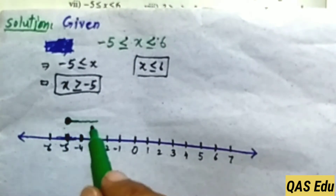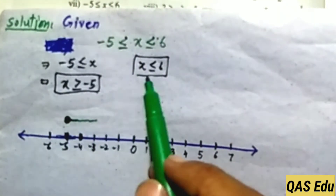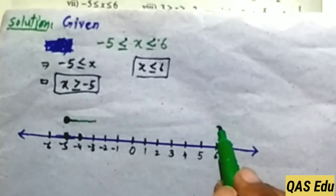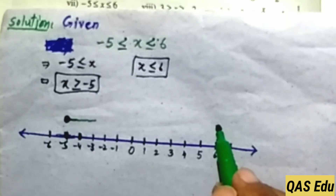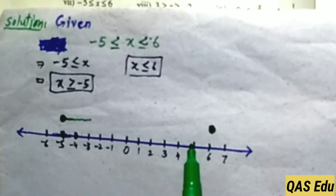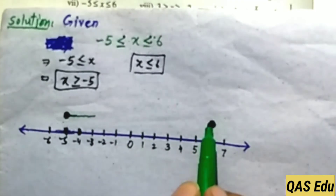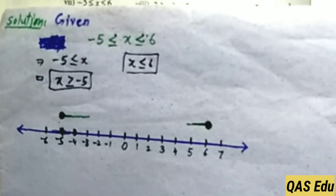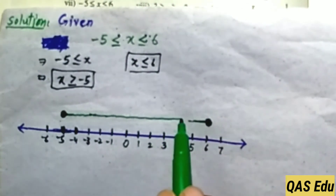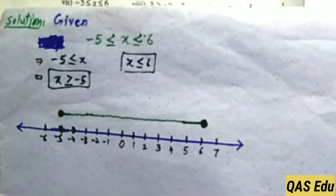For x is less than or equal to 6: since x equals 6, draw a filled circle at 6. Values less than 6 are 5, 4, 3, 2, 1 — draw an arrow to the left. Both statements shown on one number line give the solution set for this compound linear inequality.